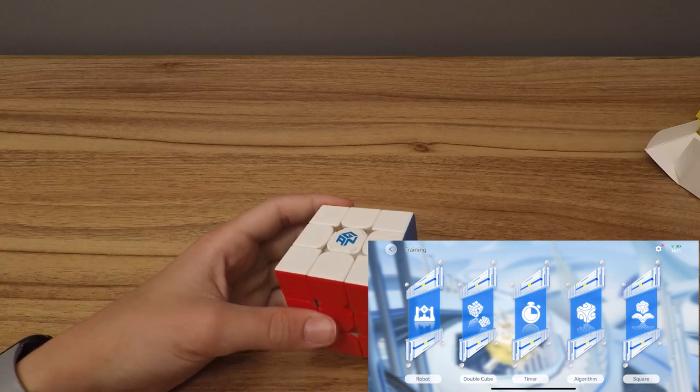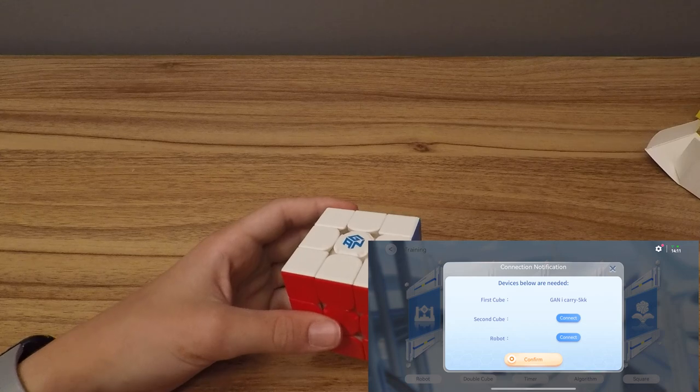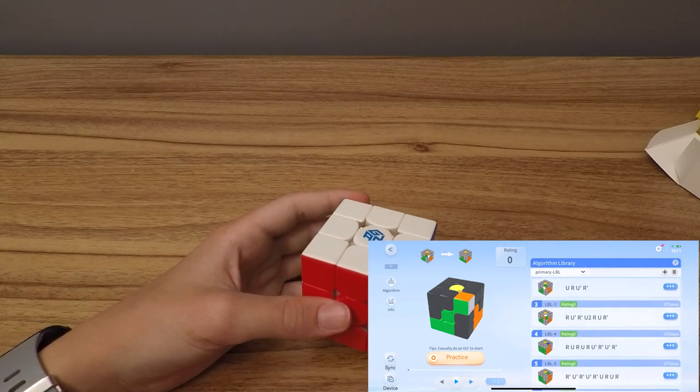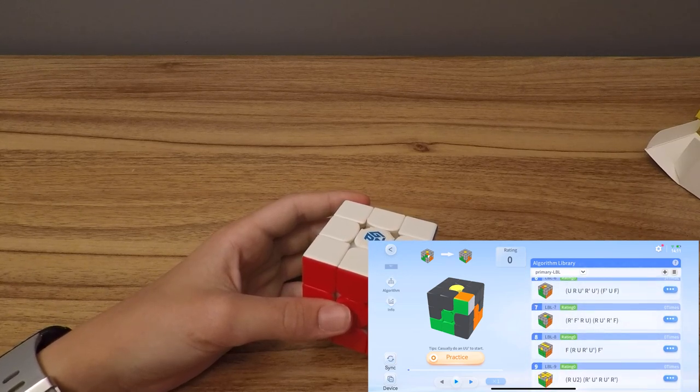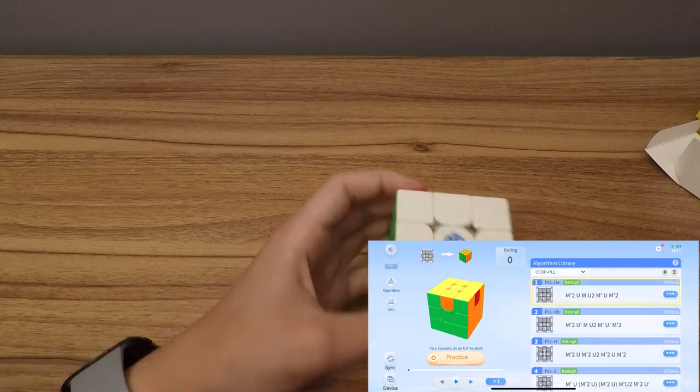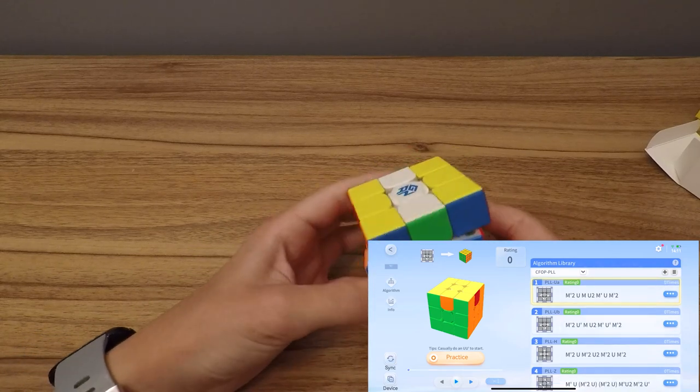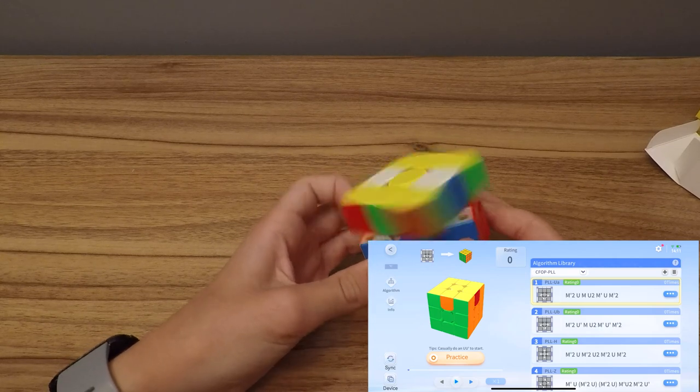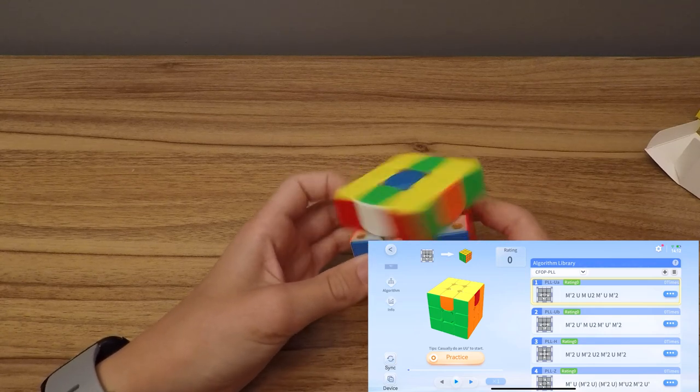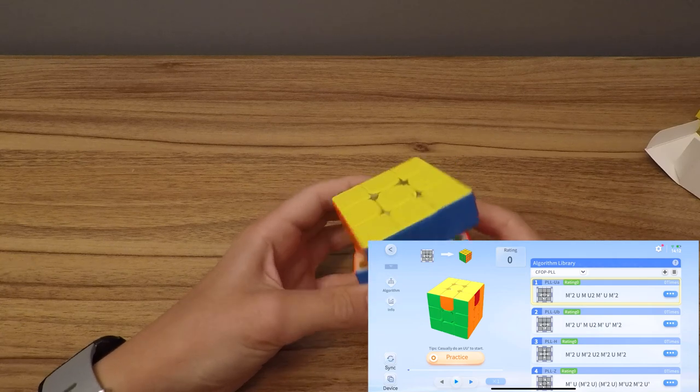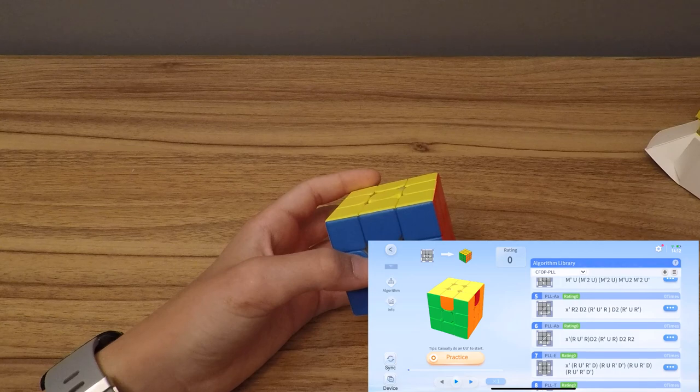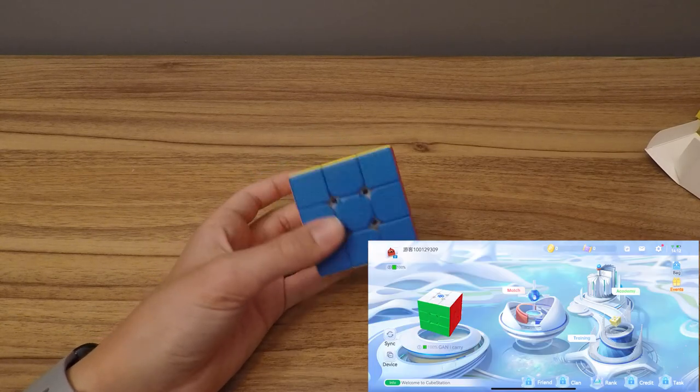I'm curious what double queue is, but I feel like I need two cubes. Algorithm, let's look at that. Oh, that's cool. So it teaches you these algorithms. These look like beginner algs. Let's see. CFOP, let's look at PLL. UA, yep, that's the same algorithm I use. H perm, I do U primes instead of Us. I just find it easier to do that. Z perm, again, I also do U primes instead of Us. And then E perm, I use different E perms. Let's do an online match, I guess.